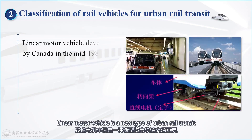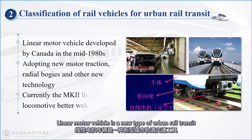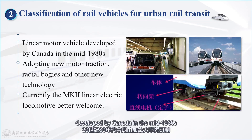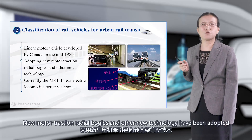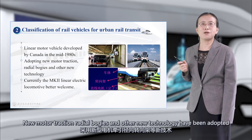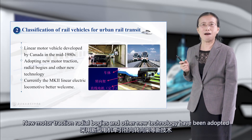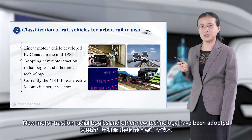The linear motor vehicle is a new type of urban rail transit developed by Canada in the mid-1980s. New motor traction, radio bogies, and other new technologies have been adopted.